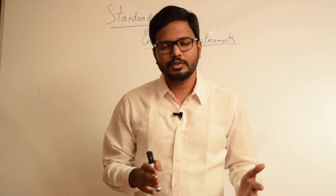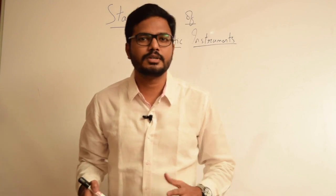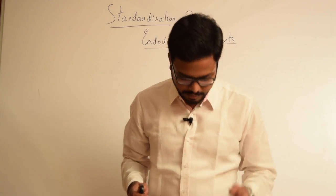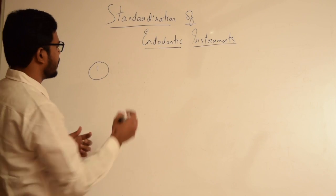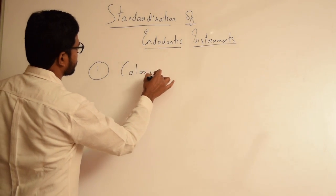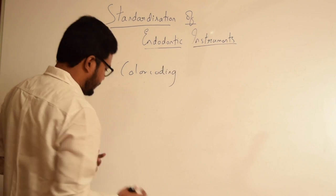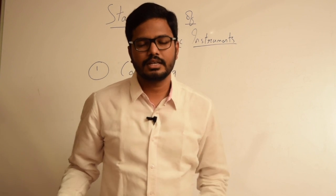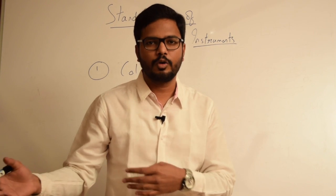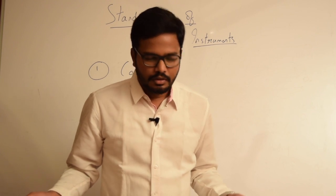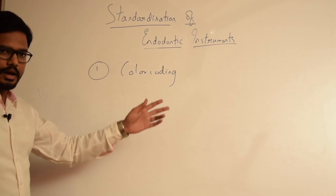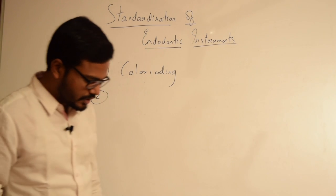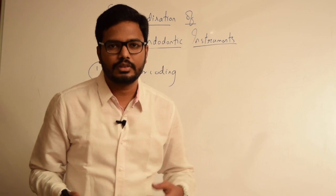Now I'll discuss some commonly asked questions from this topic. The first type involves color coding — for example: what is the color of a size 25 K-file? You might have four options like white, yellow, red, or blue. There are also more challenging questions based on the diameter and taper of the instrument.